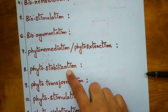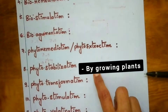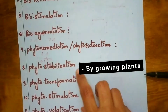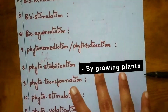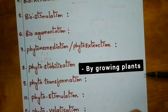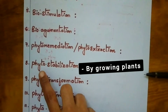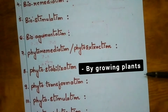Phytostabilization means reducing the mobility of environmental substances by growing plants. If an area contains toxic substances and you grow plants there, the roots absorb those toxic substances, which stops the movement of those chemicals, thereby removing them from the environment. That is why it is called phytostabilization.